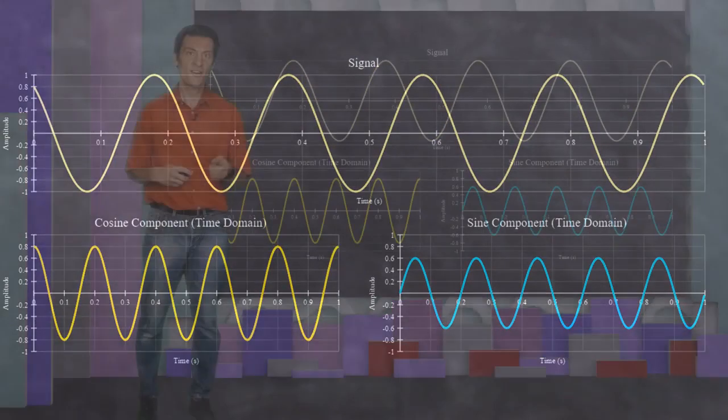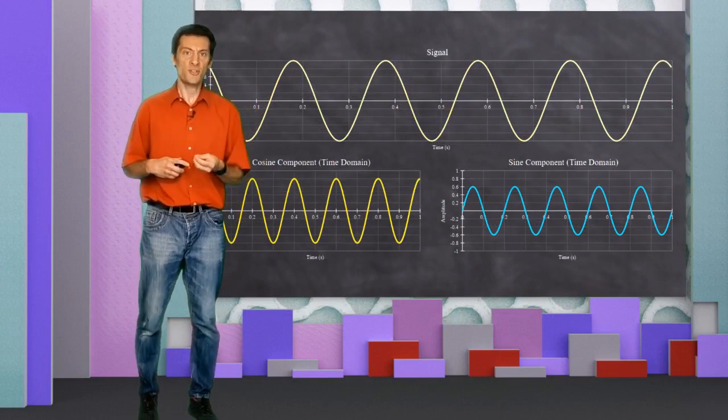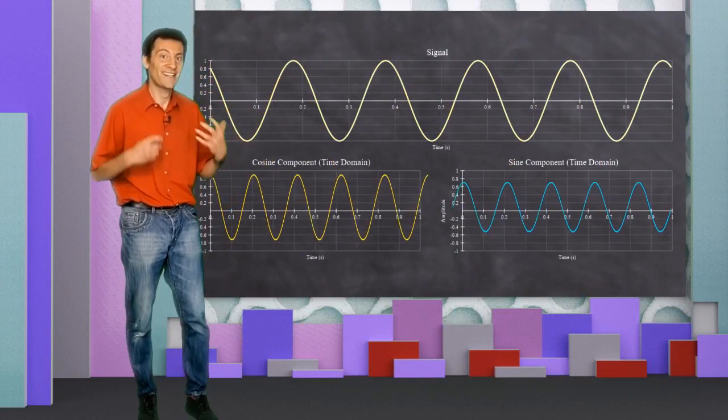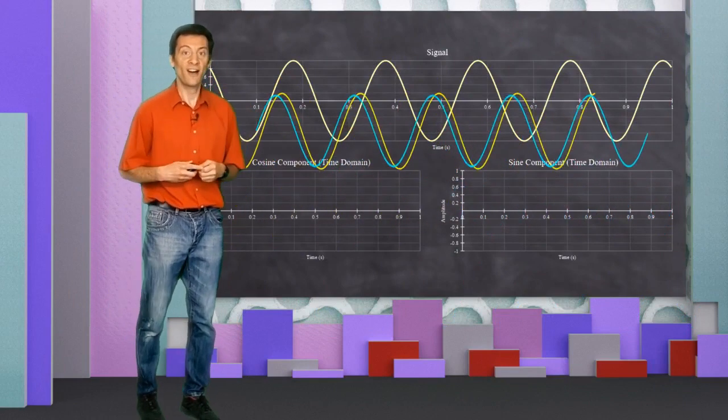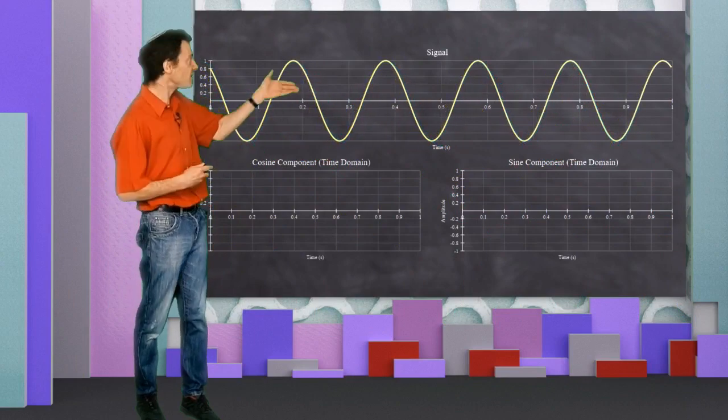They both have a frequency of 5 Hz, but their amplitudes are such that when added together, they produce the 5 Hz sinusoid we started with.